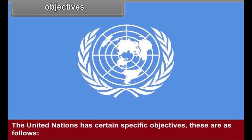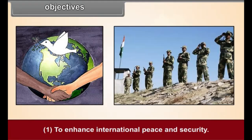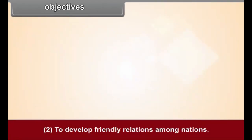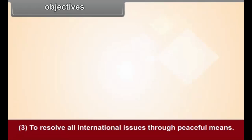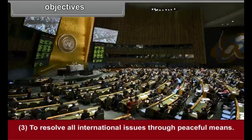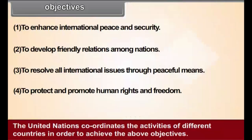Objectives: The United Nations has certain specific objectives. These are as follows: 1. To enhance international peace and security. 2. To develop friendly relations among nations. 3. To resolve all international issues through peaceful means. 4. To protect and promote human rights and freedom. The United Nations coordinates the activities of different countries in order to achieve the above objectives.